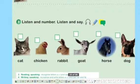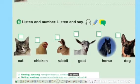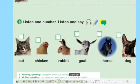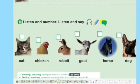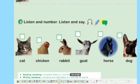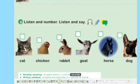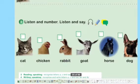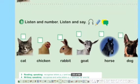Listen again and check your answers. Cat — 1. Goat — 2. Dog — 3. Horse — 4. Rabbit — 5. Chicken — 6.